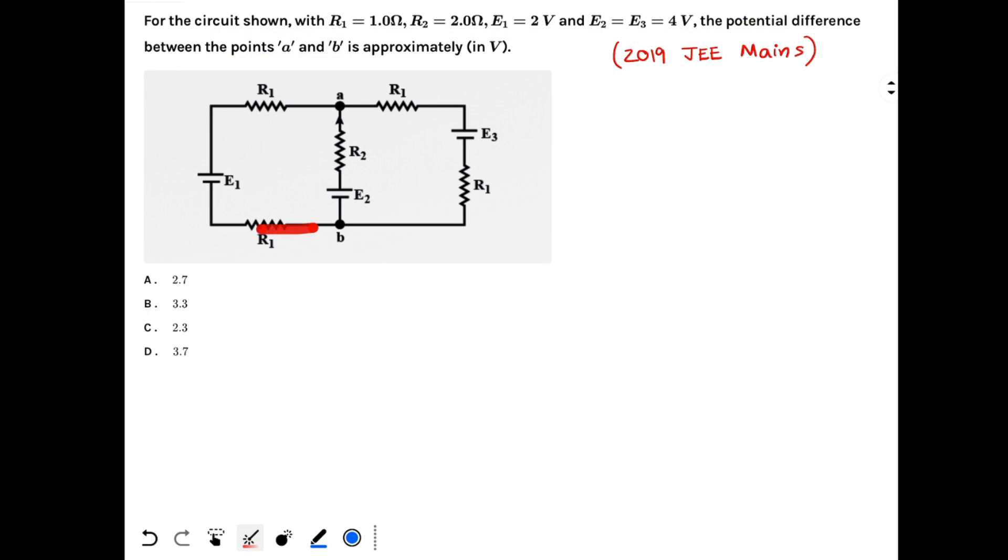So see, we have this circuit. Three batteries are there with resistances in each of the branches. What I can do is I can redraw the circuit first. So let's redraw the circuit.